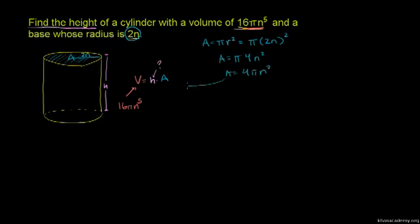When you substitute 2n into πr squared, you get π times (2n) squared, which equals 4πn squared.